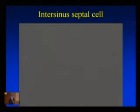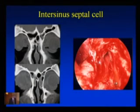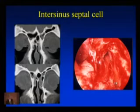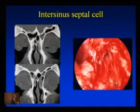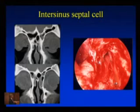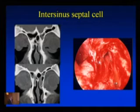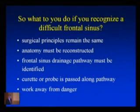Visualization of the intersinus septal cell and the frontal ostium — once those are cleared, put the axillary flap back and drape it nicely over that axilla. In another example of an intersinus septal cell, you can see it pushing and narrowing down the frontal ostium quite significantly. What you see looking up from below is the intersinus septal cell here and the frontal sinus opening there — quite narrow — and that's all you need to do. You've cleared the drainage pathway; you don't need to open it any further.